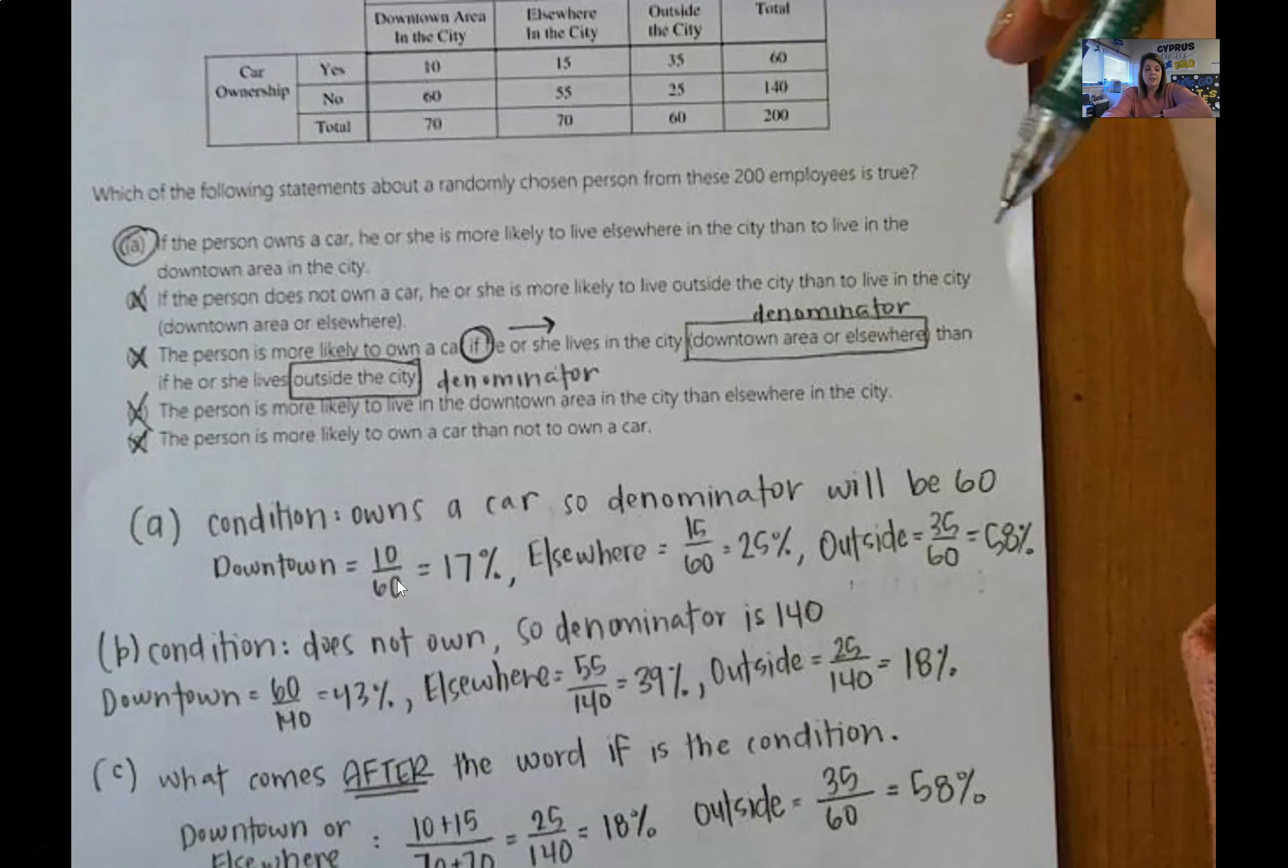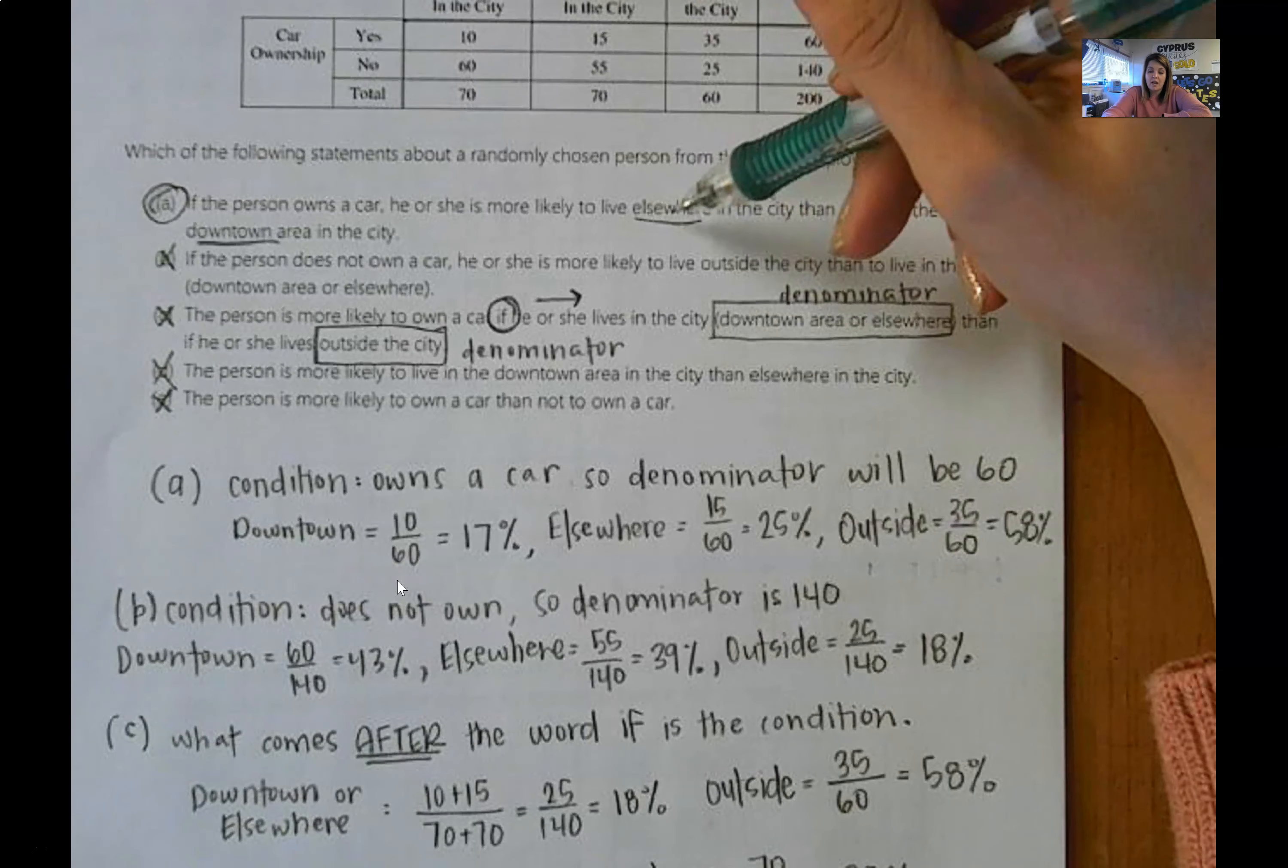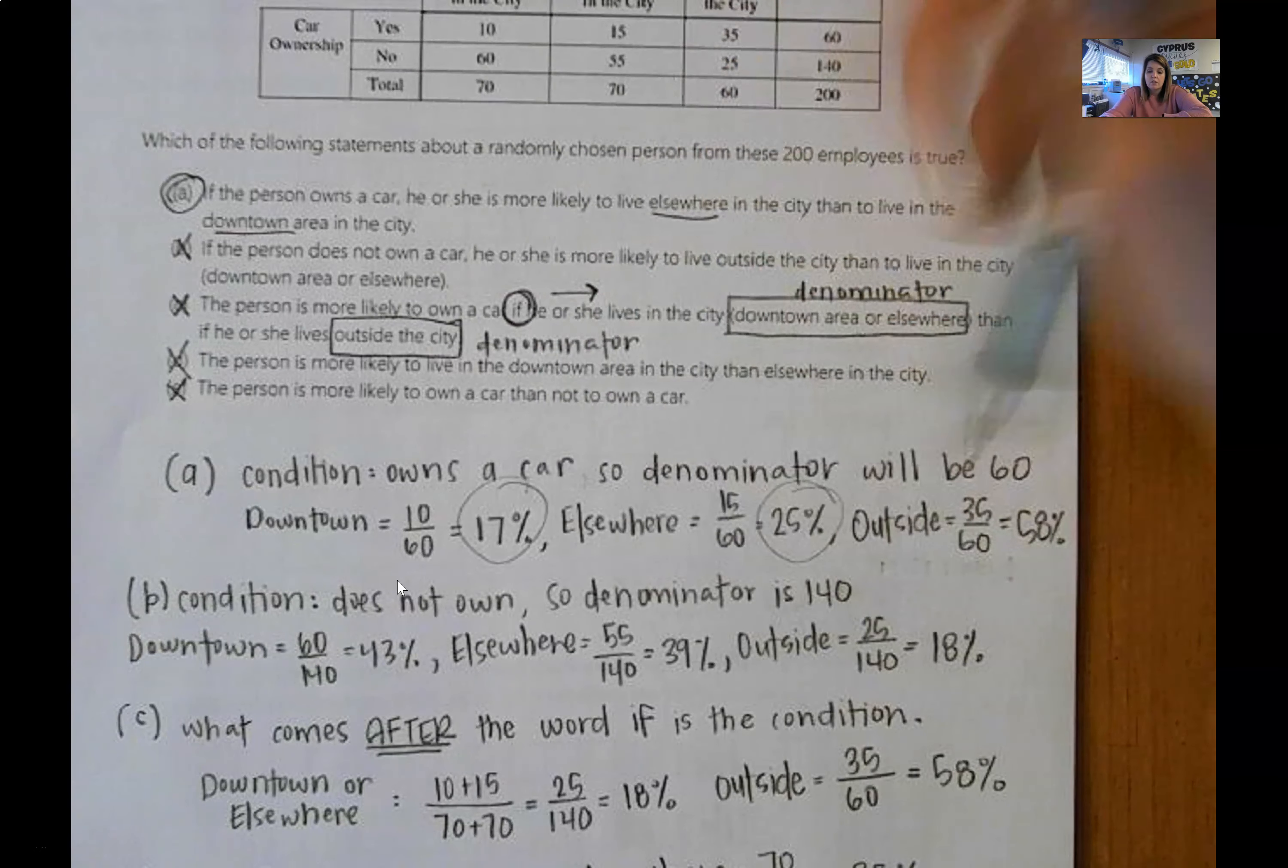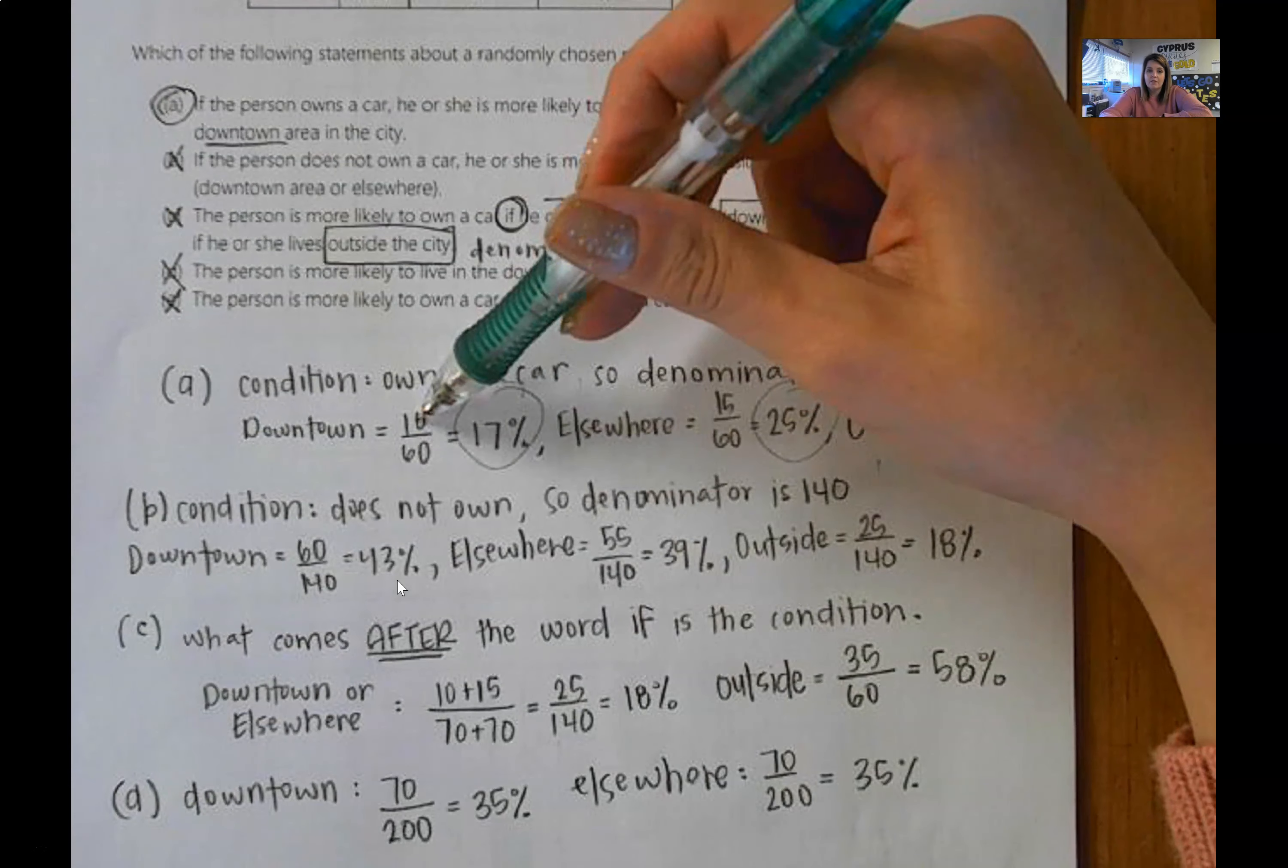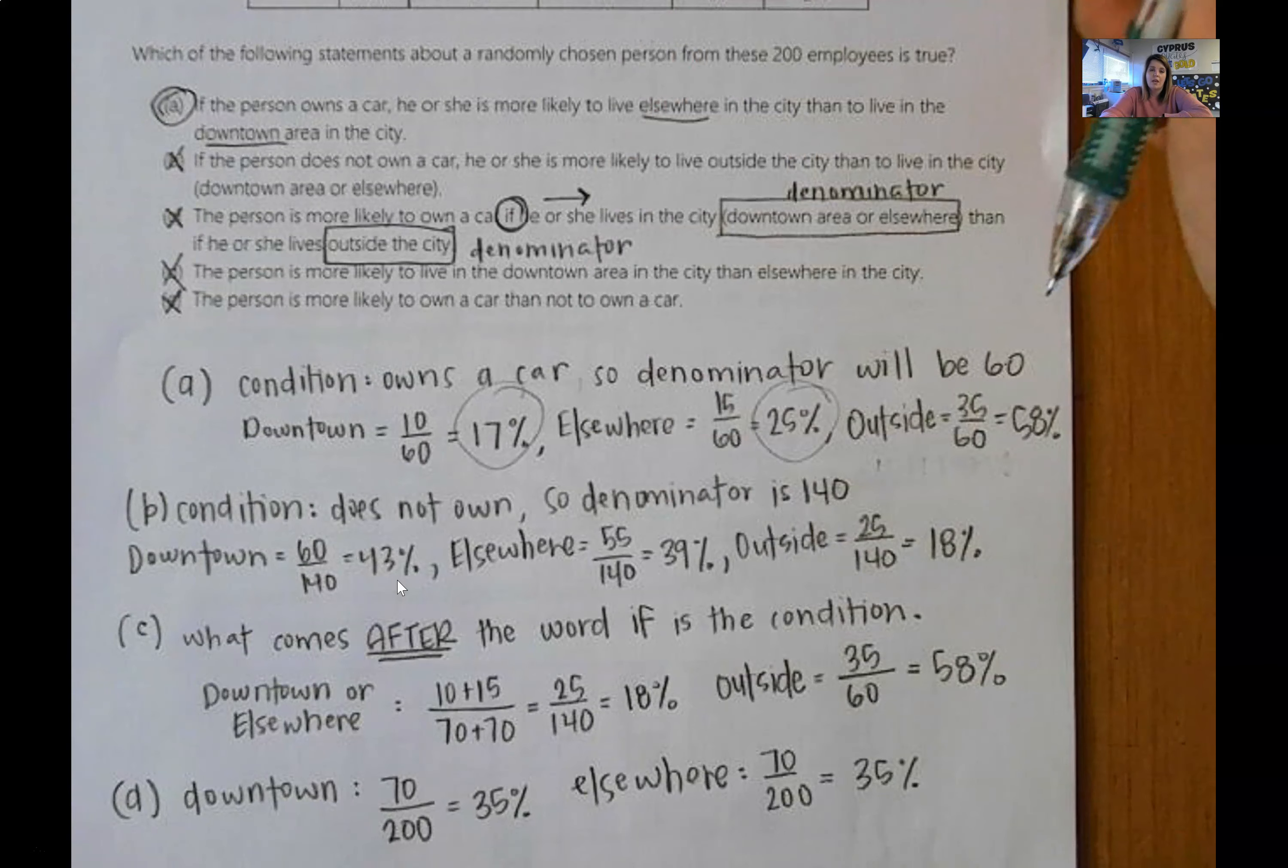So the first one says if the person owns a car, he or she is more likely to live elsewhere than to live downtown. That's where I got messed up. I didn't pay attention that they wanted us to compare elsewhere to downtown. So the condition is owns a car, if a person owns a car. So that means the denominator will be 60. The condition is that they own a car, so 60 people owned a car. Then you go through and you calculate what percent of 60 lived downtown, what percent of 60 lived elsewhere, what percent lived outside. If we're comparing these two, elsewhere is more likely than downtown. So A is the correct option.